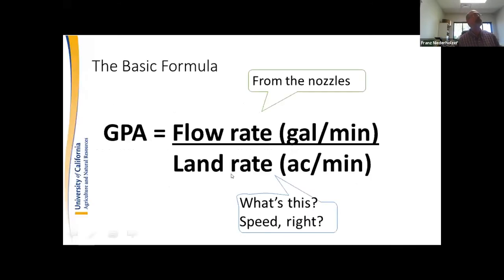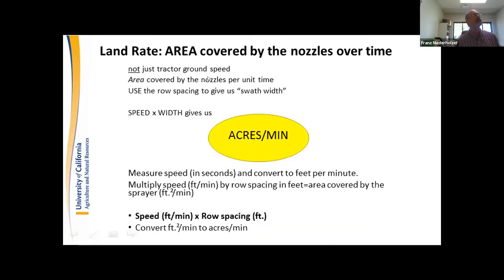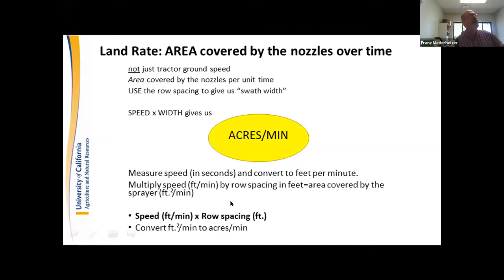Gallons per acre is flow rate over land rate. The flow rate comes from the nozzles; the land rate is determined by speed AND row width — not just tractor speed, but the area covered by the nozzles per unit time. The swath width is always the trunk-to-trunk row measurement in vineyards, orchards, and groves. Convert your speed to feet per minute, multiply by the row spacing to get square feet per minute, divide by 43,560 square feet per acre, and you get acres per minute — the input to your basic calibration formula.